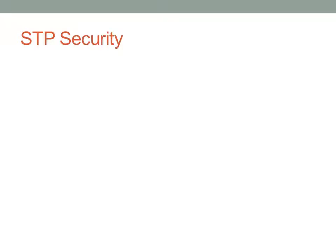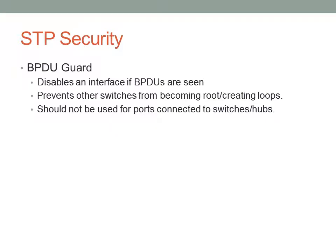There are two main SpanningTree security features. The first is BPDU Guard, which disables an interface if any BPDUs are seen. This is very useful to prevent somebody from connecting switches to your network and prevents switches from becoming root or creating network loops. If a non-administered switch accidentally loops back, the switch would see its own BPDU and disable the port. This should not be configured on ports you know are going to be connected to switches running SpanningTree.